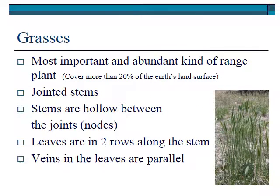Grasses are the most abundant kind of range plant. When you think of rangelands, you usually think of some ecosystem that has grasses. There's a huge diversity of grasses. They're all in the Poaceae family, and they cover about 20% of the earth. They vary from really large grasses like bamboo to really small grasses that are very ephemeral, like six weeks fescue.